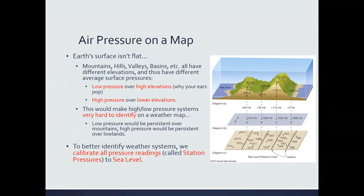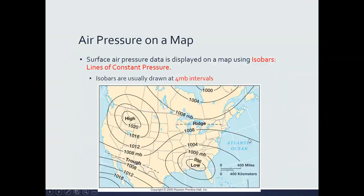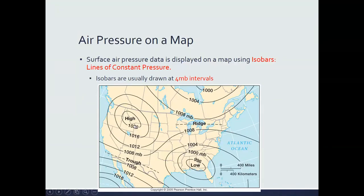What we do is essentially flatten the earth — we take all of these air pressure readings at different heights and calibrate them to sea level. Once we've done that, we can create a weather map. Air pressure is plotted on a weather map through a set of lines called isobars. Isobars are lines of constant pressure, and you'll be looking at these in more detail in this week's activity. Isobars divide areas of higher pressure on one side from areas of lower pressure on the other — they're like a border in a sense.